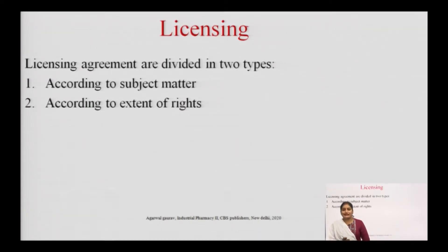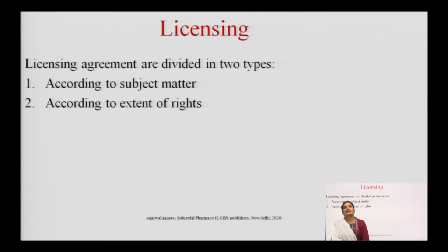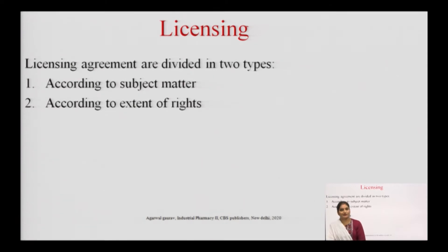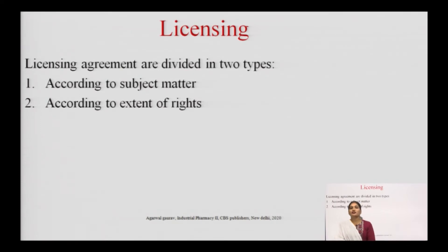License agreements are divided into two types: first, according to the subject matter, and second, according to the extent of rights. As previously discussed, technology is transferred in the form of a license, which is one of the methods of the technology transfer process. The technology developer grants permission to use their technology to the technology receiver in the form of a document called the license.